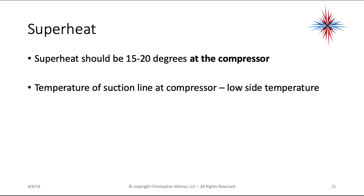Superheat should be between 15 to 20 degrees at the compressor. Now, someone out there might say superheat should be 8 to 12 degrees — there's a difference between system superheat and evaporator superheat. This is one of those numbers that, based on the efficiency of your equipment and what expansion device you're using — a fixed orifice or a TXV — can change a little bit. It's going to be lower with higher efficiency equipment. To get superheat, look at the temperature of the suction line at the compressor, minus the low side temperature.